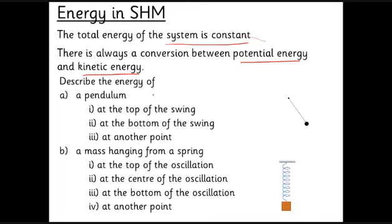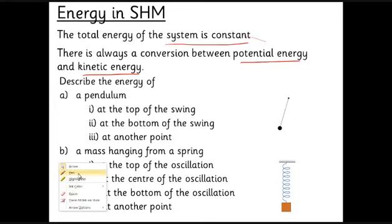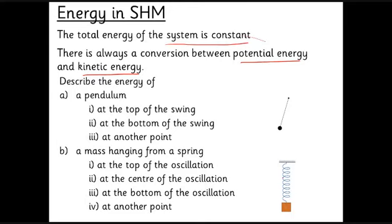At the top of the swing energy is all gravitational potential; at the bottom it's all kinetic; at any other point it's a mixture that still adds up to the same total. For the mass-spring system: at the top it's gravitational potential; at the center it's maximum kinetic with some elastic potential; at the bottom it's minimum gravitational potential but maximum elastic potential and no kinetic. The total always stays the same — in the spring system, potential energy is split into gravitational and elastic, whereas for the pendulum it's only gravitational potential and kinetic.